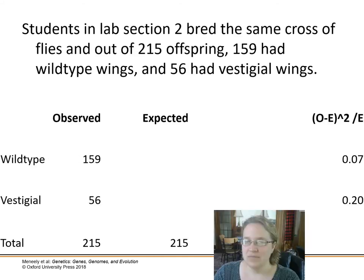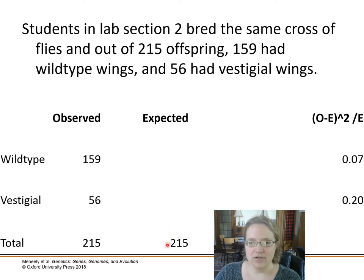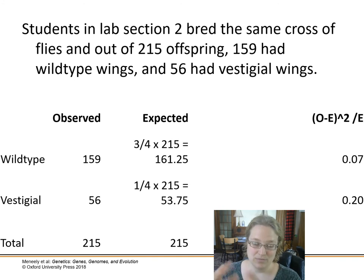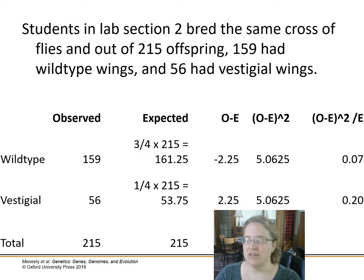Now let's see how lab section two did. Students in lab section two ran the same cross and bred 215 offspring: 159 had wild-type wings and 56 had vestigial wings. We put the phenotypes and observed values into our chart. For expected values, we multiply 215 by three-quarters to get 161.25 wild-type expected, and 215 by one-quarter to get 53.75 vestigial expected. Decimal values are fine for expected counts.